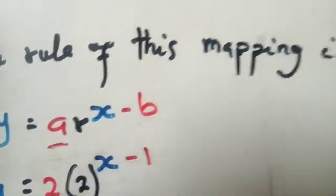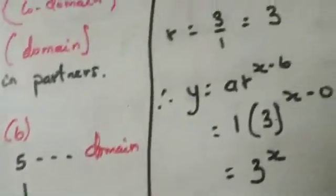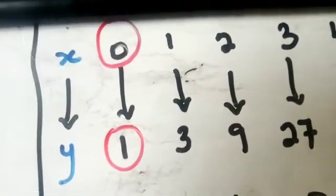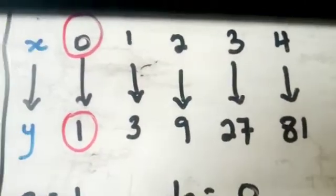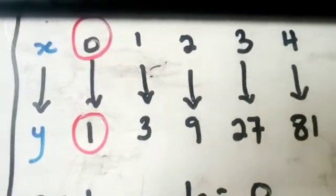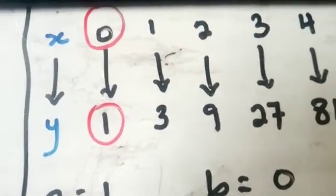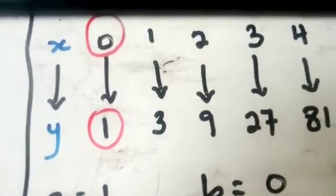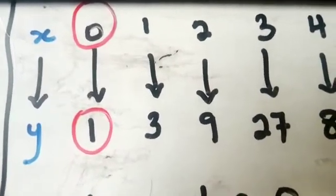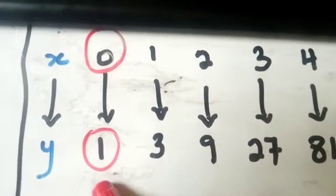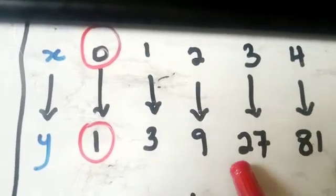Now let's look at a second example. The mapping is: 0 maps to 1, 1 maps to 3, and so on. First, you have to identify what type of mapping this is. In this video we are strictly talking about exponential mapping. There are other types like linear mapping — a link will be left below — but here we focus on exponential.